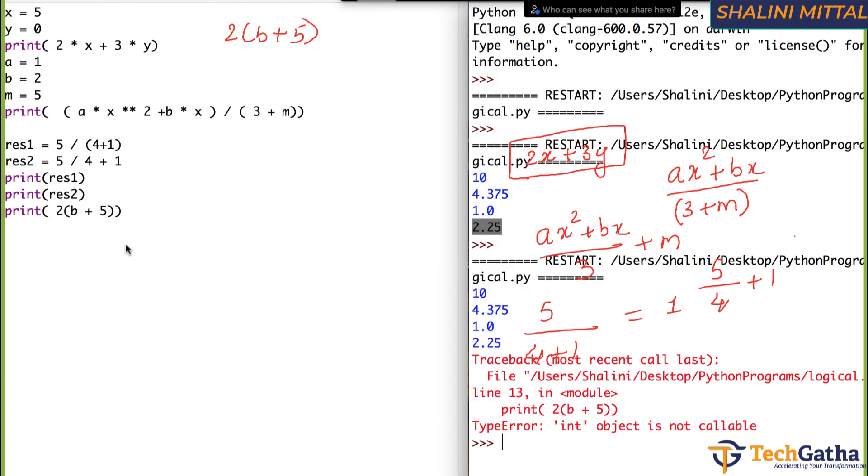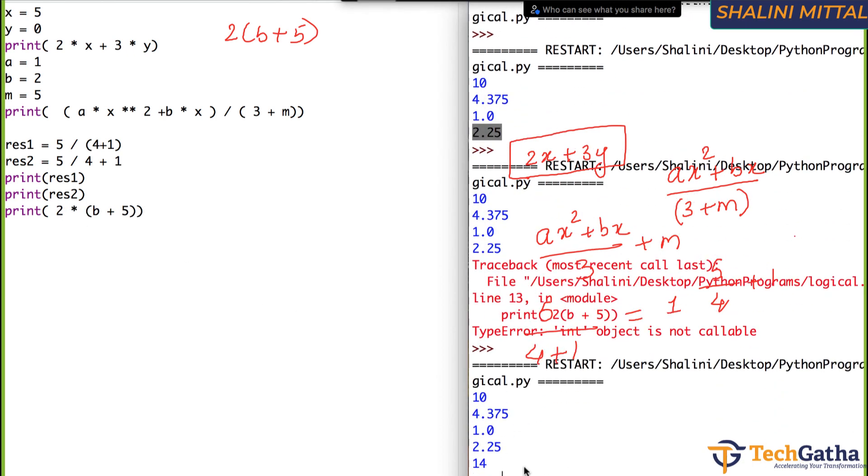int object is not callable, means 2. It is saying this 2 is not callable because if you remember, we discussed that whenever you have a word followed by round bracket, it's a function which can be called. So you have to explicitly specify it has to be 2 into B plus 5. B is 2 plus 5, that is 7 times 2 is 14.